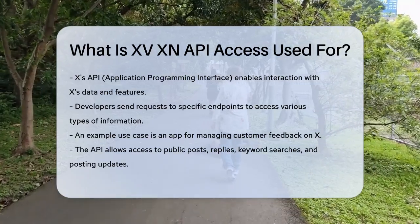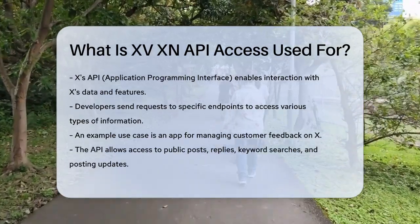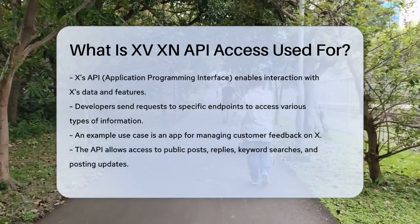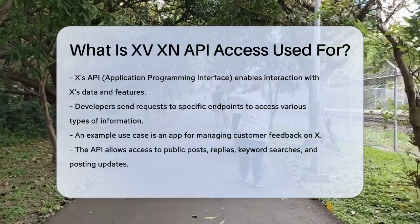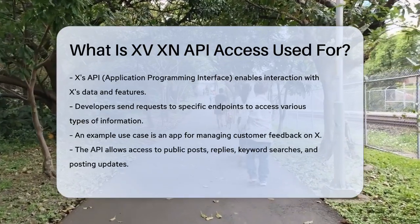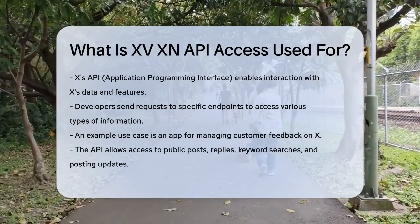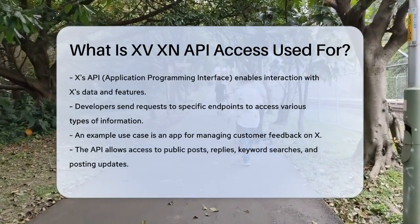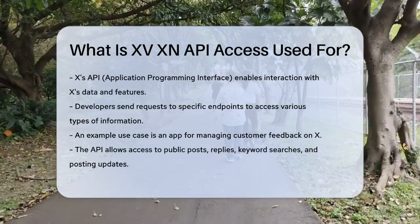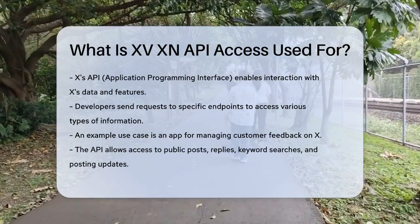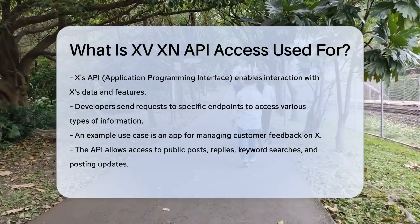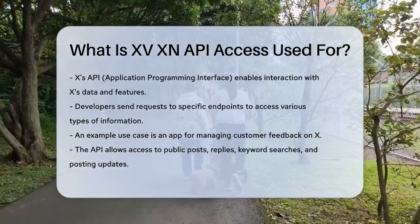Imagine you're building an app that helps a company manage customer feedback on X. With X's API, you can programmatically access public posts and replies, search for specific keywords, and even post updates on behalf of the company.